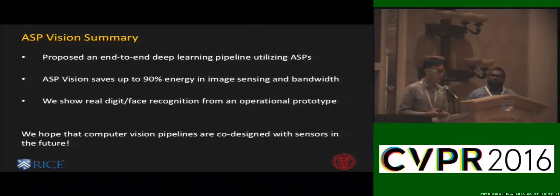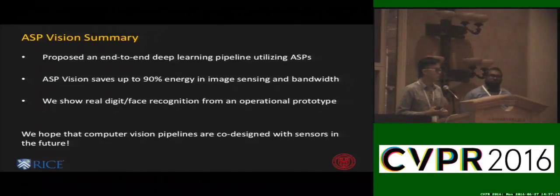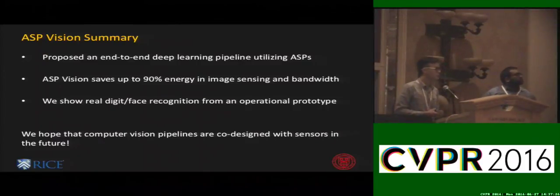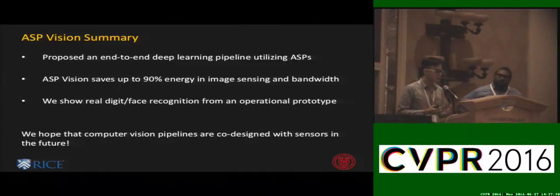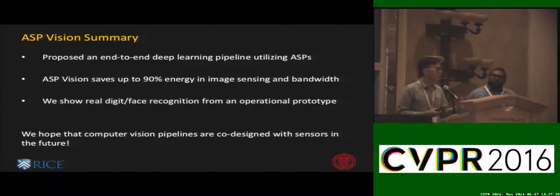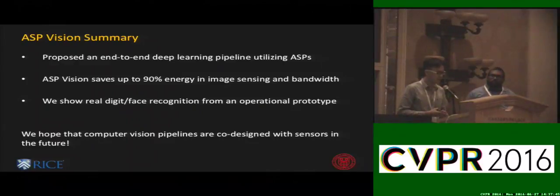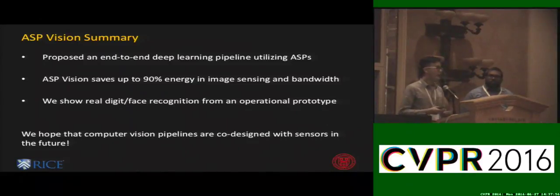To summarize, we proposed ASP Vision, an end-to-end computer vision framework leveraging angle-sensitive pixels to perform optical computation of the first layers of convolutional neural networks. ASP Vision saves 90% energy in image sensing and bandwidth and reduces flops in the CNN computing stage while performing comparably to state-of-the-art algorithms. We also showed real-world experiments using our functional prototype to perform digit and face recognition in our lab. We hope that future computer vision pipelines will be co-designed with sensors, just as with ASPs.